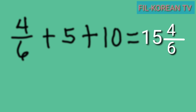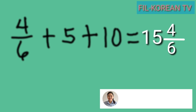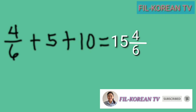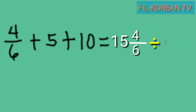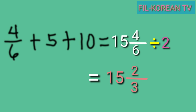This can be reduced to lowest terms because the numerator four and the denominator six are both composite numbers and they have common factors. So we need to get the GCF of four and six and divide them by their GCF. The GCF of four and six is two, so we will divide them by two. Copy the whole number fifteen, then divide: four divided by two equals two, and six divided by two equals three. So the answer is fifteen and two thirds.